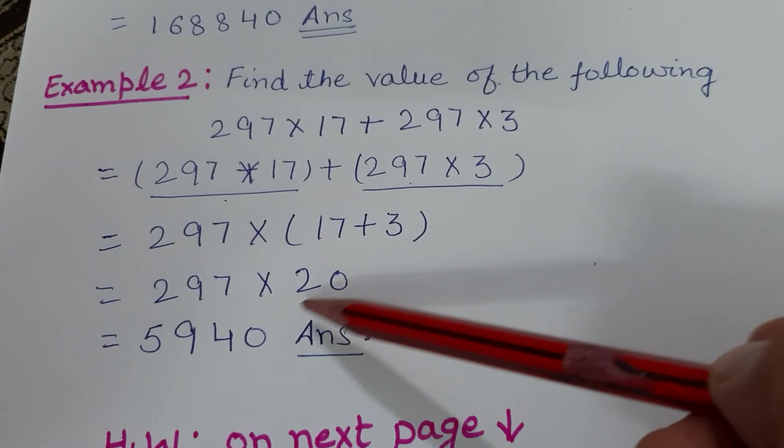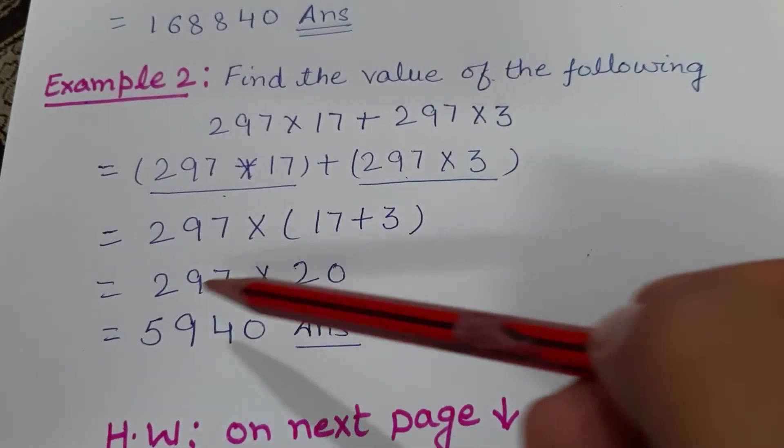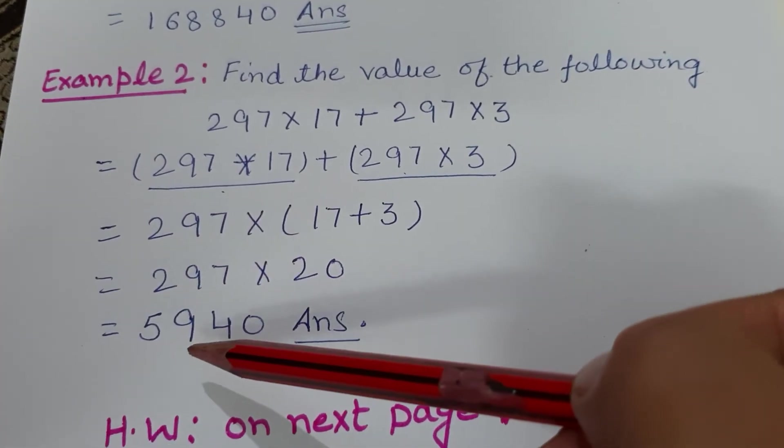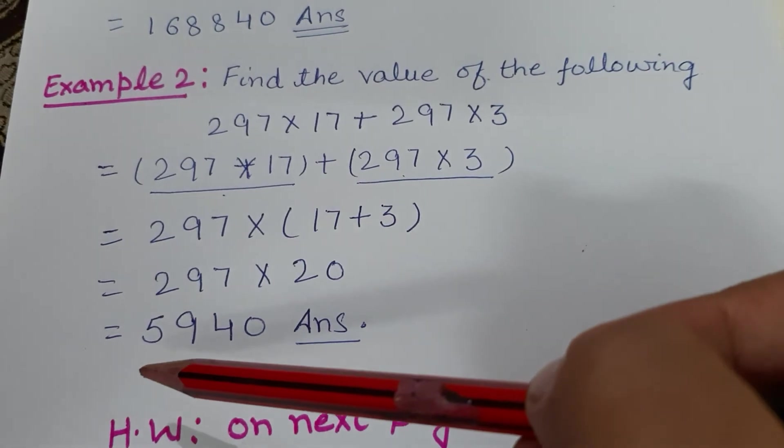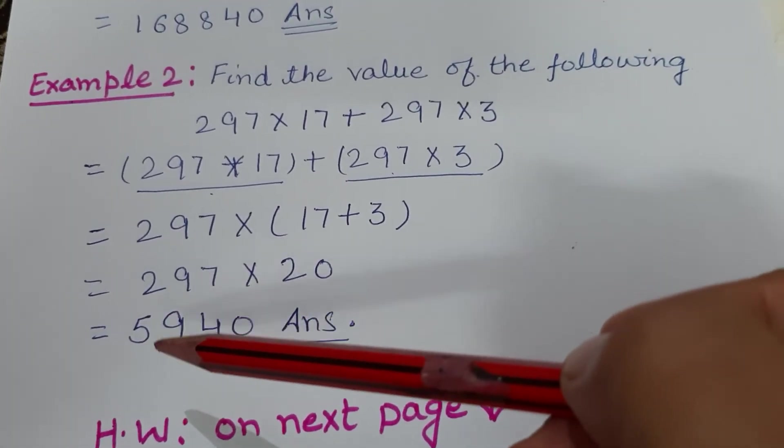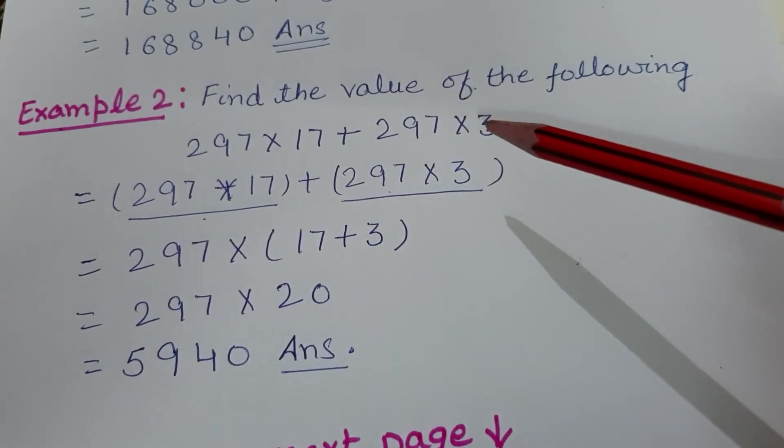One zero is there, we will write it as is. 2×7 is 14, write 4, carry 1. 2×9 is 18, plus 1 is 19, write 9, carry 1. 2×2 is 4, plus 1 is 5. So the answer is 5,940. See, your calculation was so complicated.